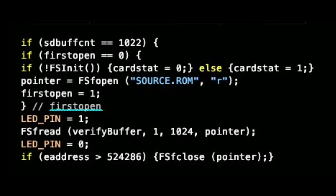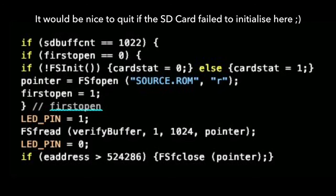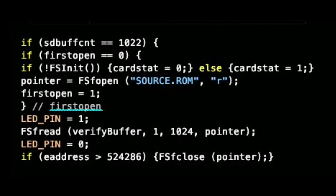For every kilobyte that we've read in, we're also going to load in one kilobyte from the file that we're verifying against into verify buffer, which is also one kilobyte in length. The same code here is checking if we have to open the file because it's the first time we've accessed the file, or if we have to close the file because we're at the end of the EEPROM addressing space.